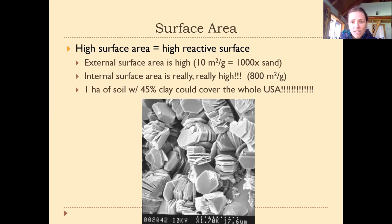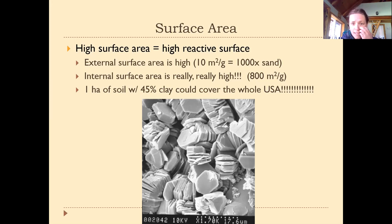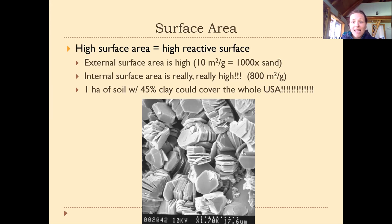These aren't numbers you need to memorize, but they're interesting: the external surface area of colloids is really high. One gram of soil — about the size of a sugar cube — if you spread out its little clumps, they'd cover 10 square meters. That's about a thousand times more surface area than sand. If you then dismantled the pieces into all their internal sheets, they'd cover around 800 square meters. And one hectare of soil with about 25% clay content — the top meter — could be spread out to cover the entire United States.